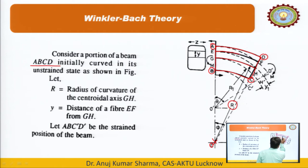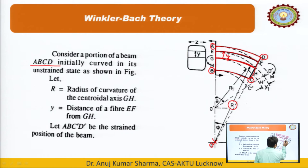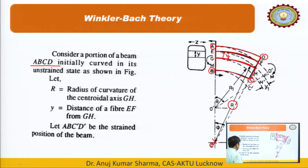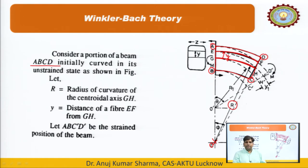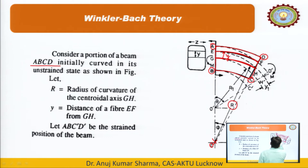We have assumed a fiber at a distance y from the centroidal axis GH. Now we bend the beam. Due to bending, straining occurs, and as a result the curvature changes. Due to this change in curvature a new curve A′B′C′D′ is obtained. The radius of curvature has also shifted, and the new center of curvature is O′ with radius R1.